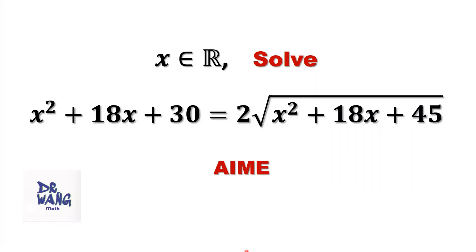Here is the question. If x is a real number, we want to solve the following equation: x squared plus 18x plus 30 equals 2 times square root of x squared plus 18x plus 45.